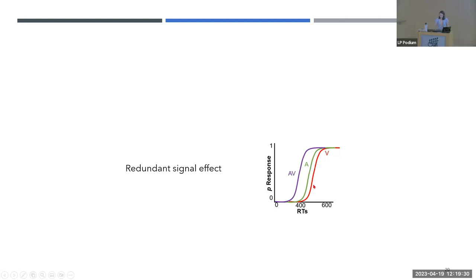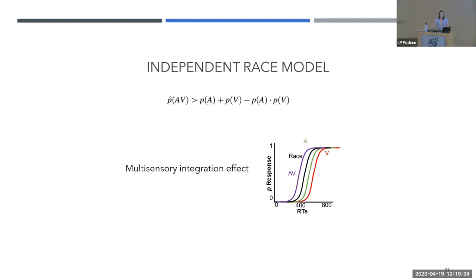To prove there is a genuine multi-sensory integration effect, we use a statistical procedure called the independent race model. We need the so-called violation of the race model, meaning we compare our bimodal stimulation to a predicted model — the race model — based on the summed unimodal probability of those two unimodal stimulations, specifically the sum minus their product. Multi-sensory integration is confirmed only when the bimodal stimulation is faster than this race model.